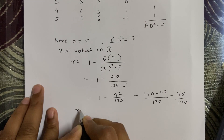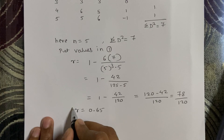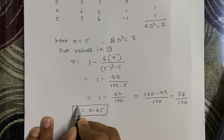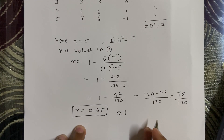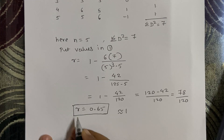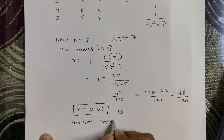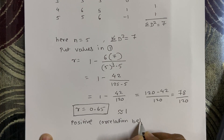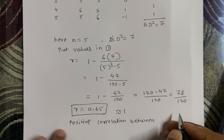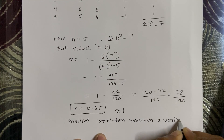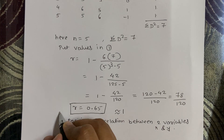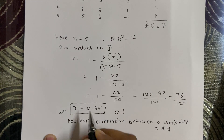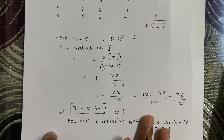So the r value is 0.65, and this is the final answer. Since this value is close to 1, we can say there is a positive correlation between the two variables x and y. This is the Spearman Rank Correlation result for this example.